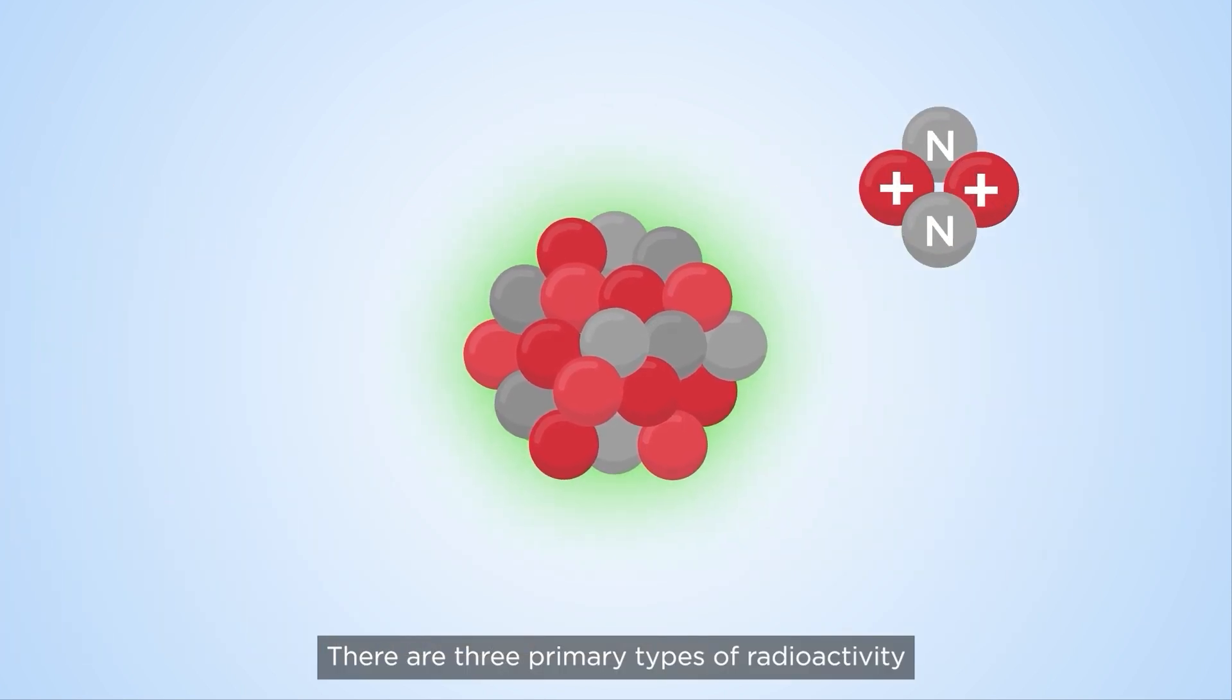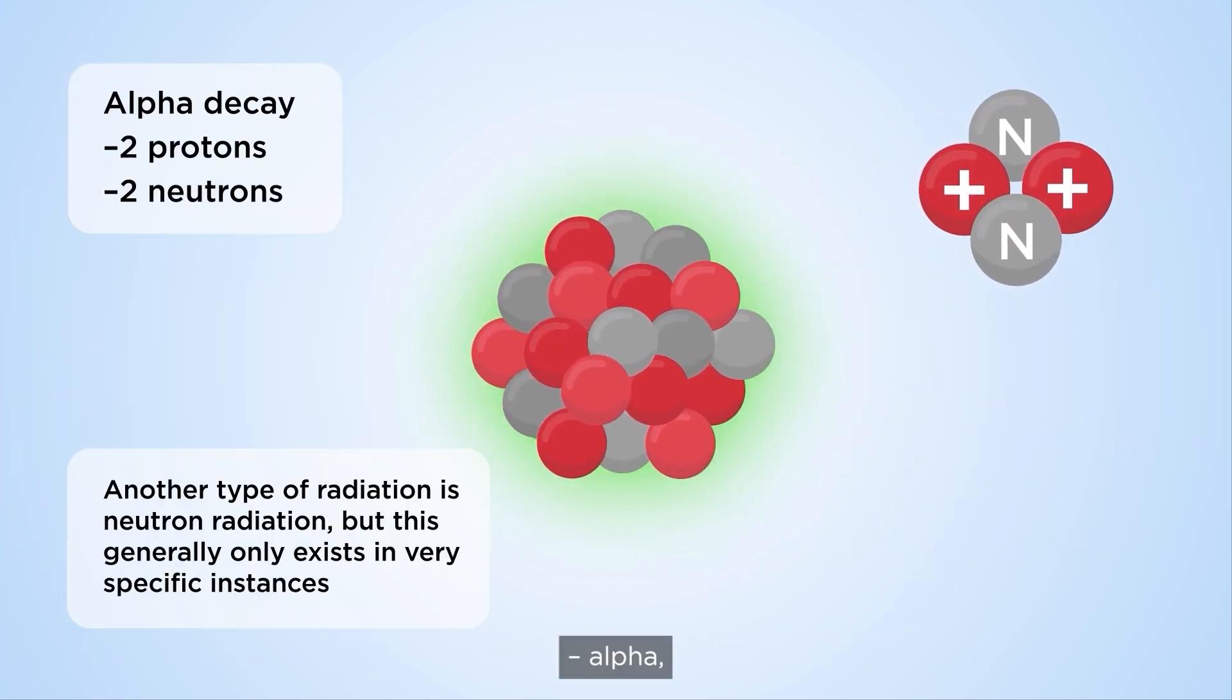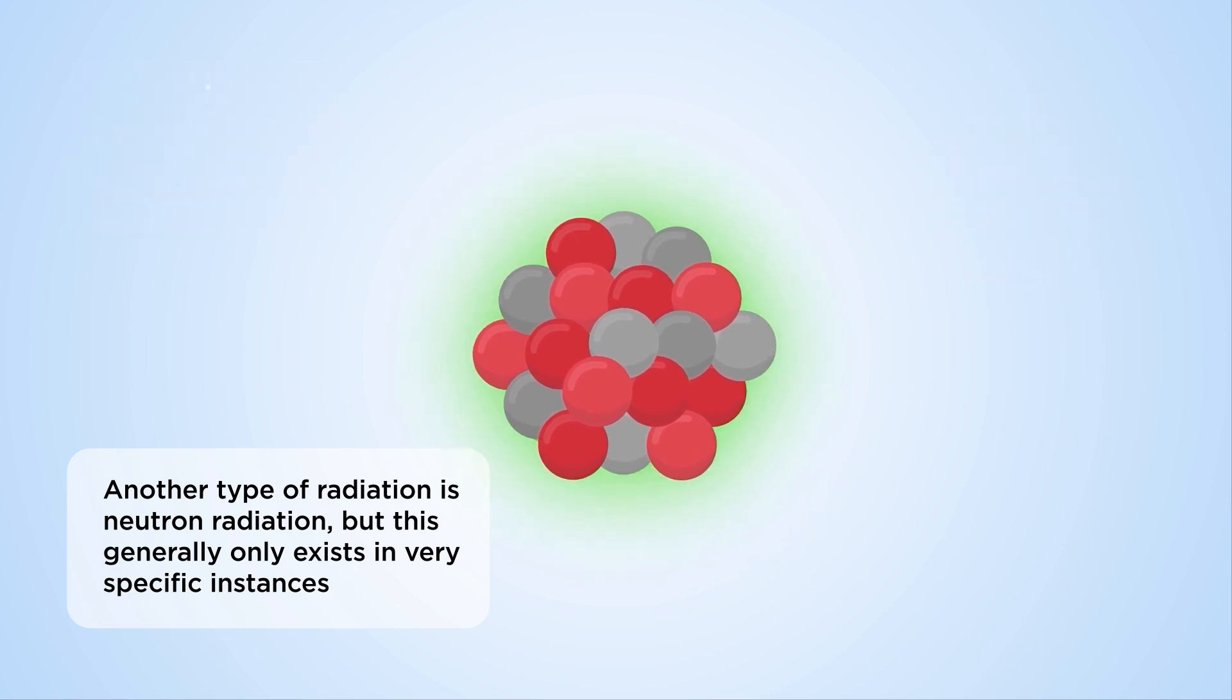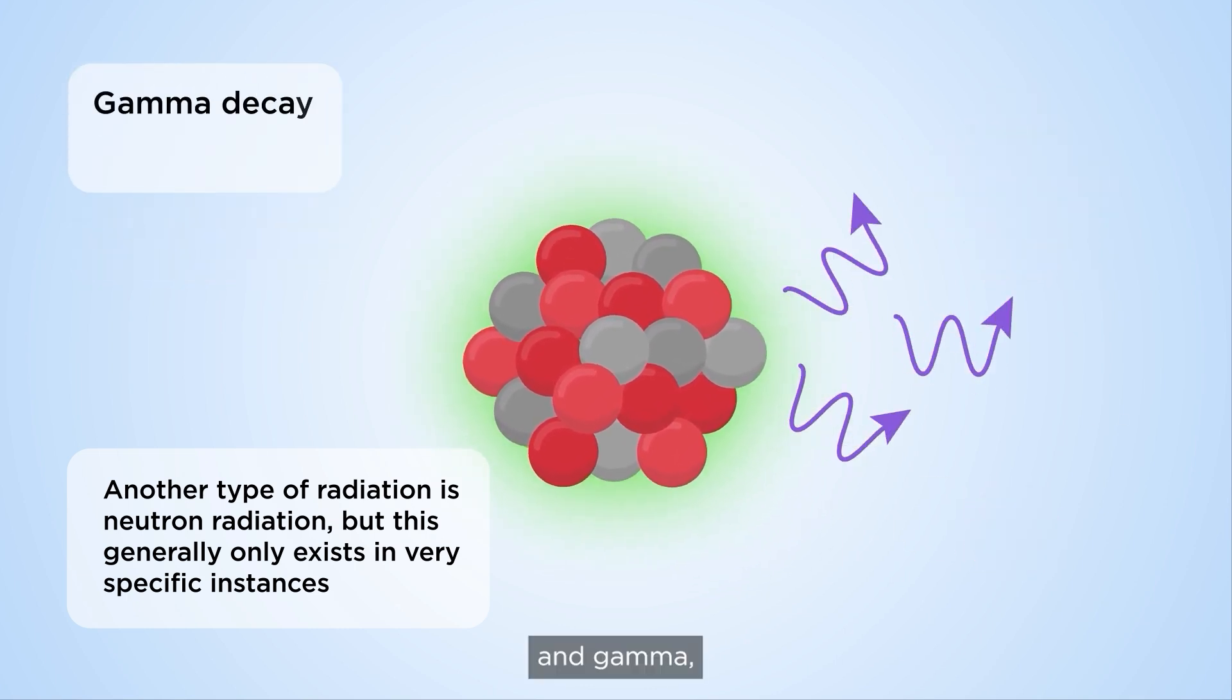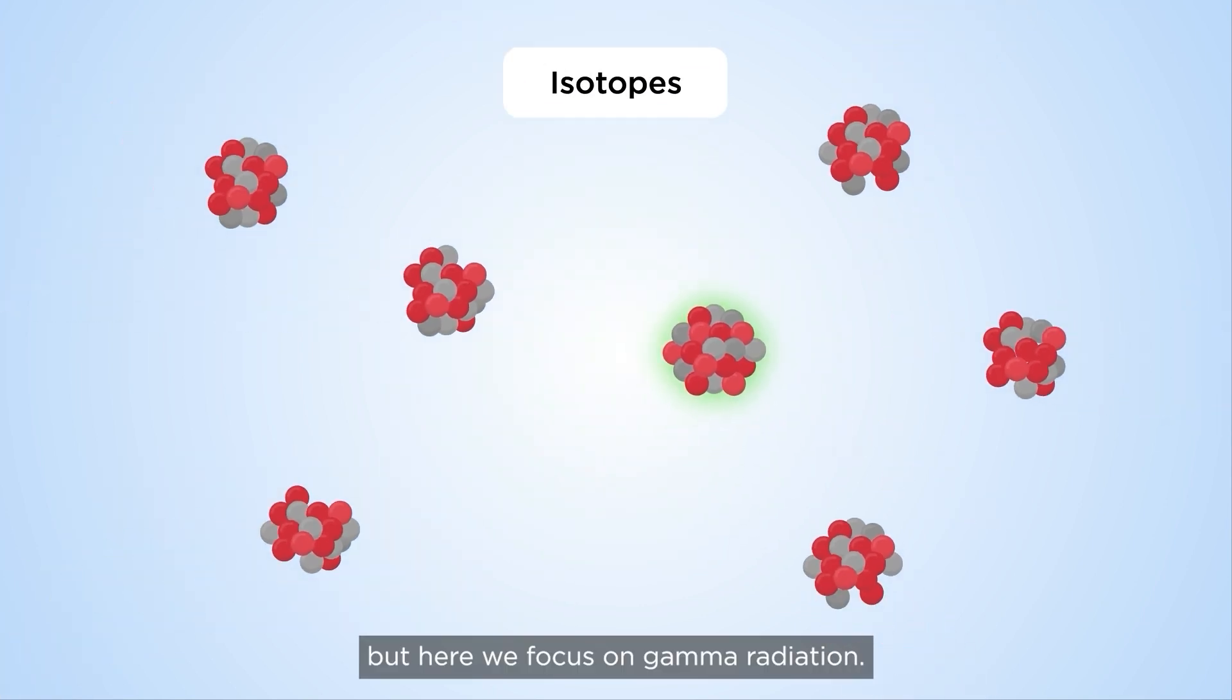There are three primary types of radioactivity: alpha, beta, and gamma. But here we focus on gamma radiation.